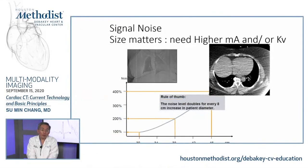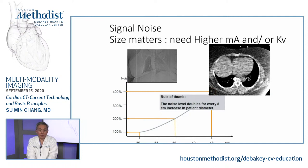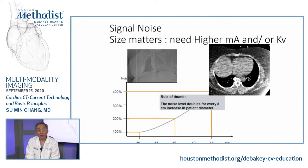Noise does not only depend on the kV — it also depends on patient size. If you have a lot of soft tissue, you'll have more noise to overcome, requiring higher energy and more photons. The rule of thumb is that noise level doubles for every 8 centimeter increase in the patient's circumferential diameter.